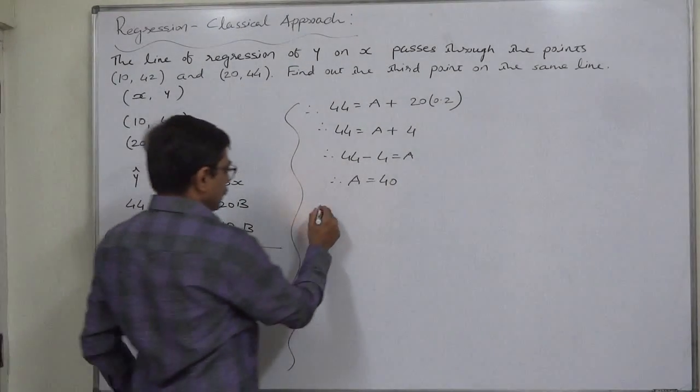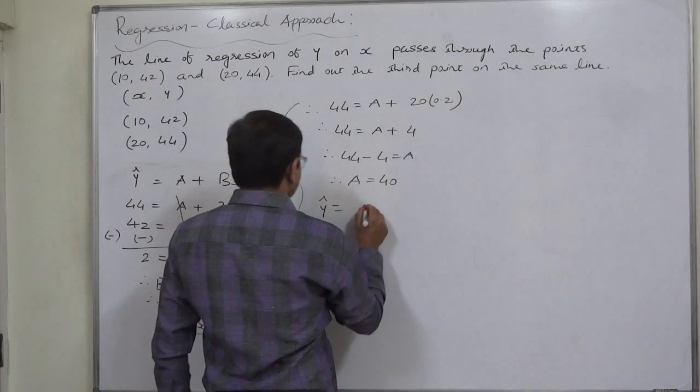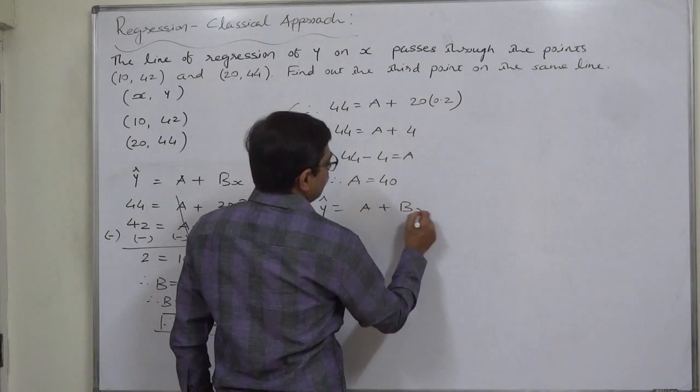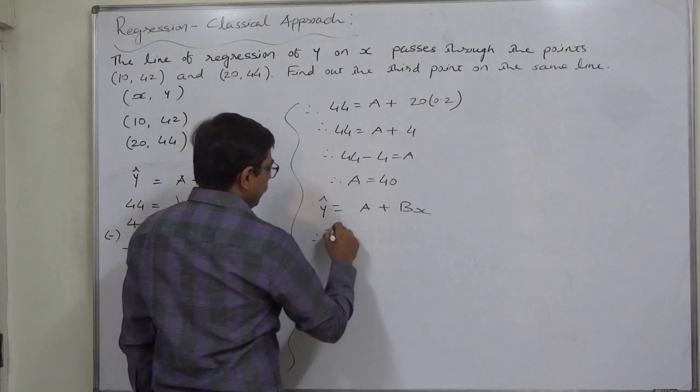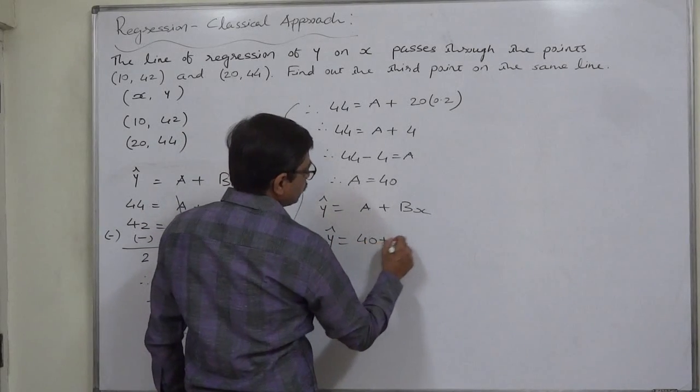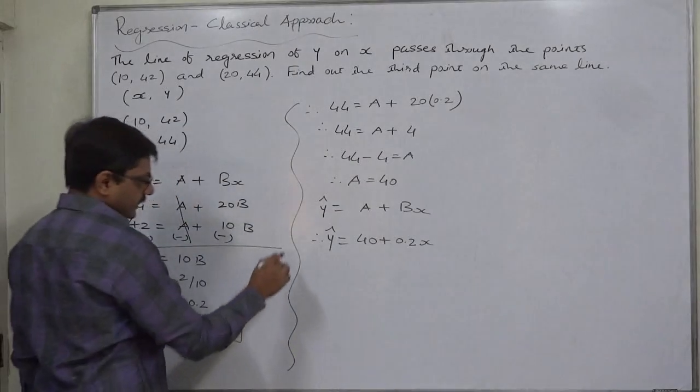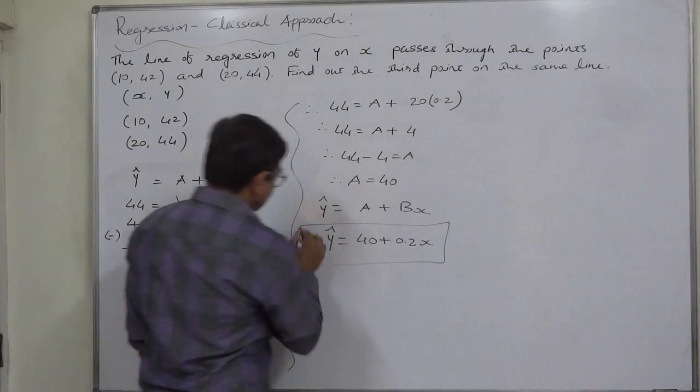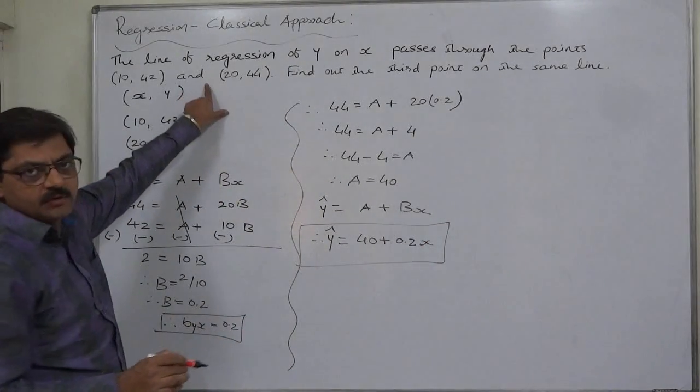ŷ = a + bx, therefore ŷ = 40 + 0.2x. In this particular case, this is the line of regression of y on x for this particular case.